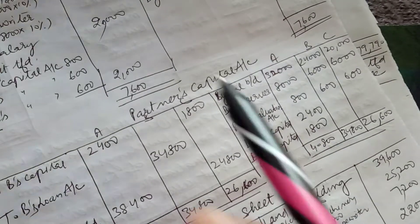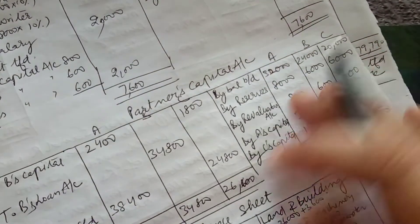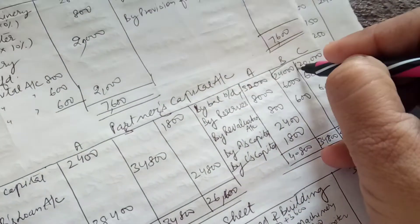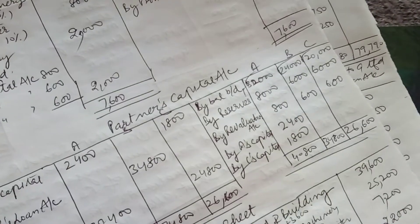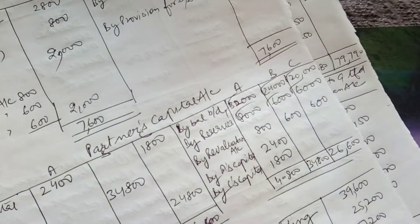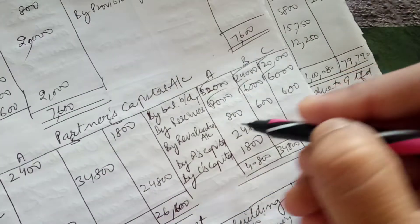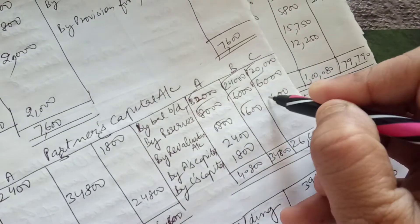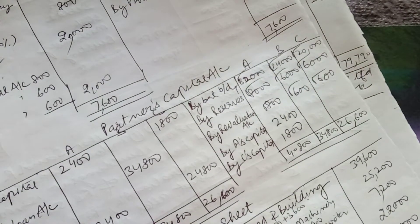In the partners' capital accounts, the opening balances are 32,000, 20,000, and 420 respectively. The reserve of 20,000 is divided in ratio 4:3:3 and credited to each partner's capital account. The revaluation account profit is also transferred to the capital accounts. Up to this level the adjustments are complete.